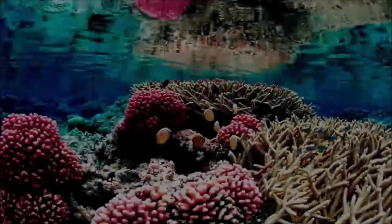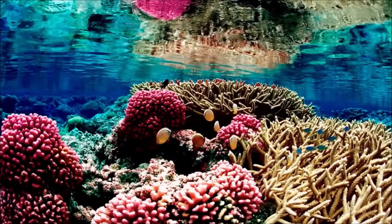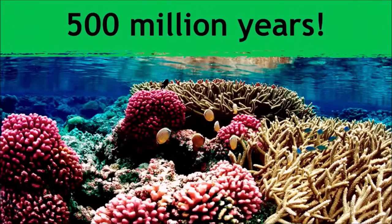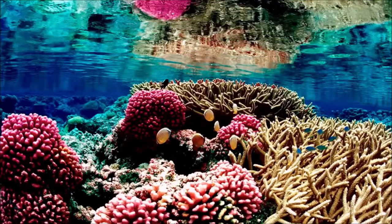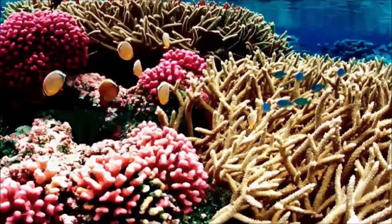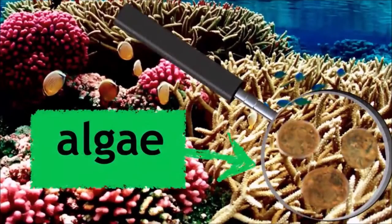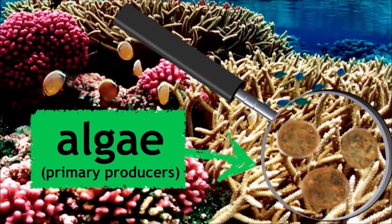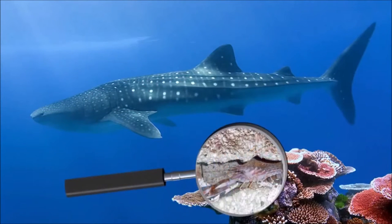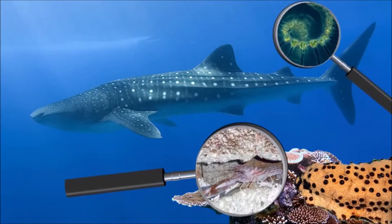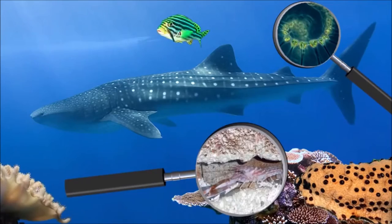Coral reefs are an excellent example of a diverse ecosystem that has existed for as many as 500 million years. The coral actually has a symbiotic relationship with tiny algae, which are the producers in the ecosystem. From whale sharks to pistol shrimp, from sea cucumbers to phytoplankton, this ecosystem is teeming with more organisms and interactions than there are bases in a tiny clownfish's DNA.